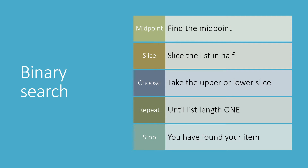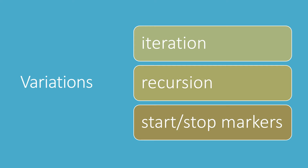The binary search that we've learned so far involves finding the midpoint, slicing the list in half, taking the upper or lower slice, and repeating this process until we have a list of length one. At this point you've either found your item or it's not in the list at all. There are three main ways of writing the binary search: slicing using iteration, slicing using recursion, or using start and stop markers and not slicing at all.